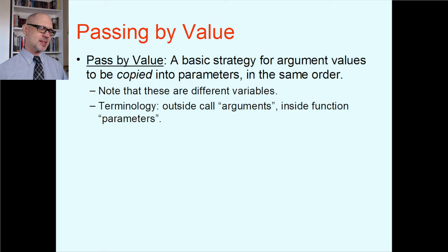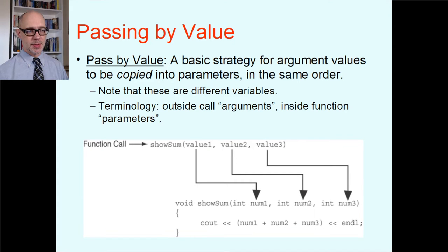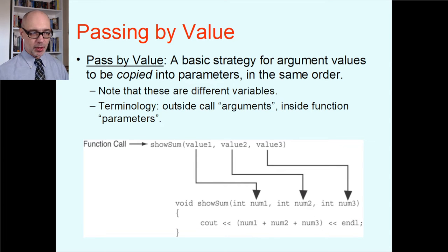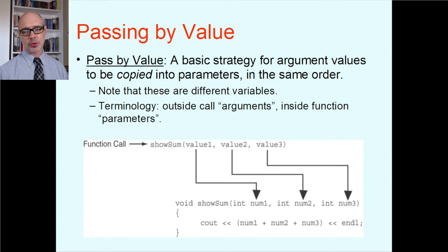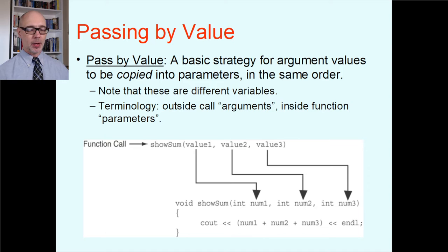The technical terminology: in the outside context, the numbers being sent in are called arguments; on the inside they're called parameters. So let's say you have a function call to showSum passing in three parameters — value1, value2, value3 from the main function. It jumps control into the showSum function, copying value1 into num1, value2 into num2, value3 into num3. How many variables are there? The correct answer is six — the three value variables in the main function and the three parameter variables inside the function.